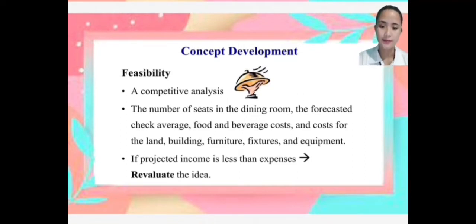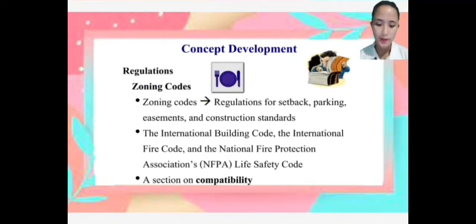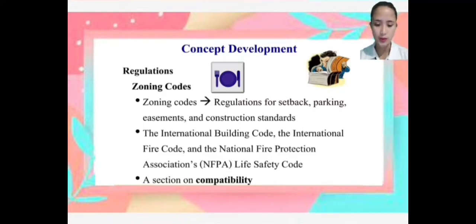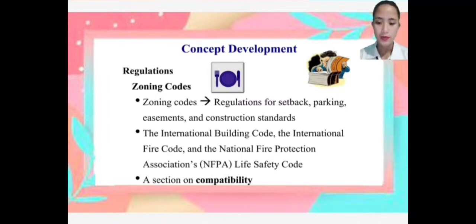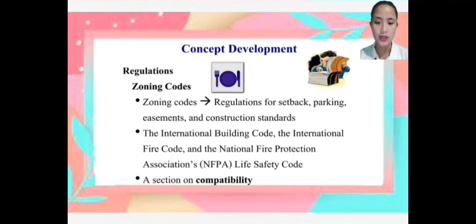Regulations — Zoning codes: A zoning ordinance is a rule that defines how property in specific geographic zones can be used. Regulations cover setback, parking, easements, and construction standards. Other regulatory frameworks include the International Building Code, the International Fire Code, and the National Fire Protection Association (NFPA) Life Safety Code.